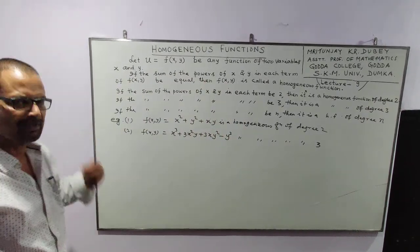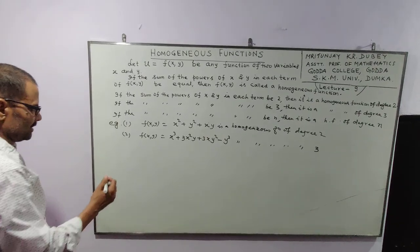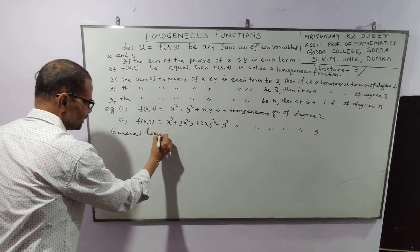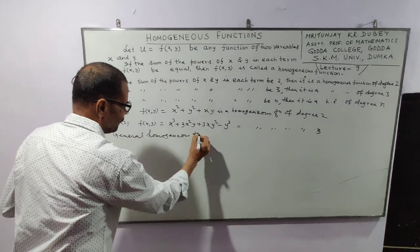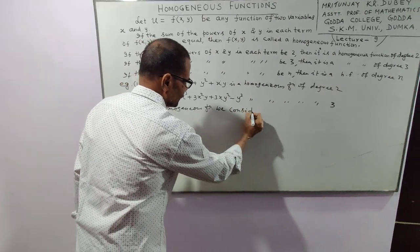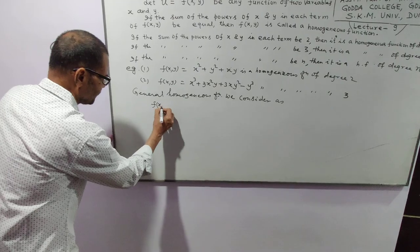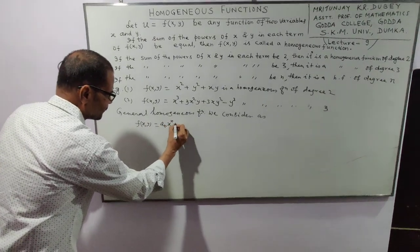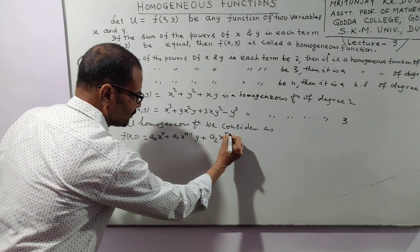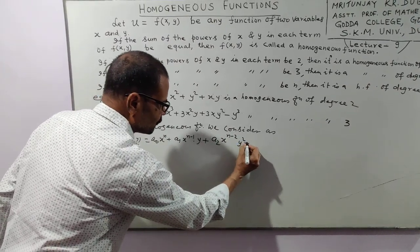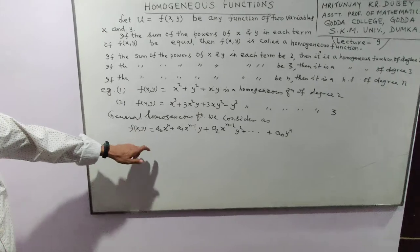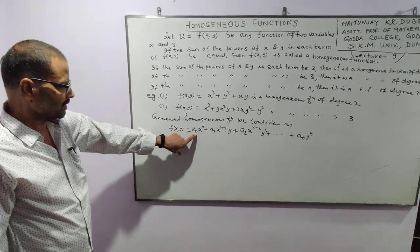Similarly, we can put several examples for degrees 4, 5, 6, and so on. The general homogeneous function we consider as: f(x,y) is equal to a₀xⁿ plus a₁xⁿ⁻¹·y plus a₂xⁿ⁻²·y squared, and so on, up to aₙyⁿ. This is a general homogeneous function of degree n.